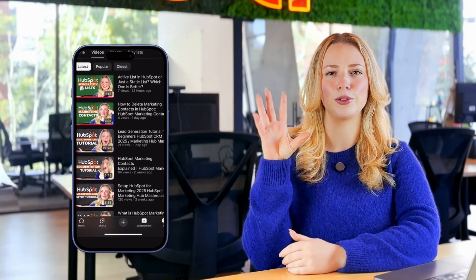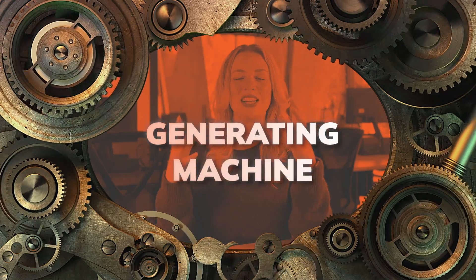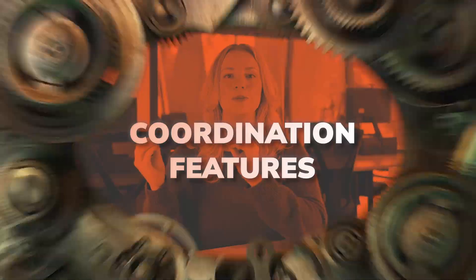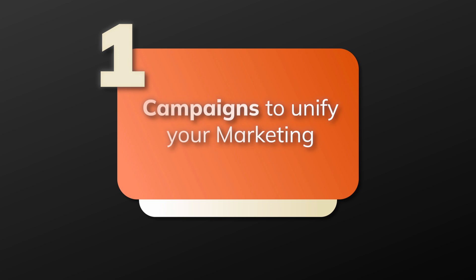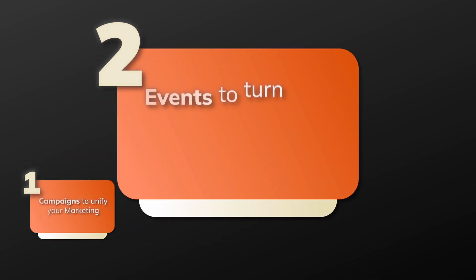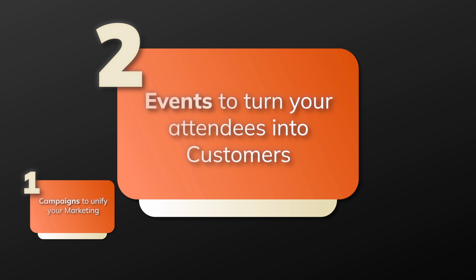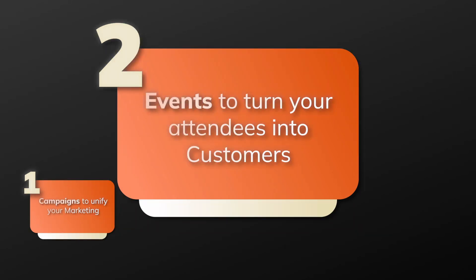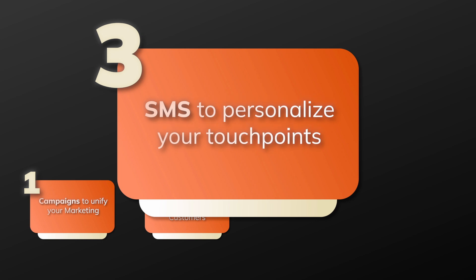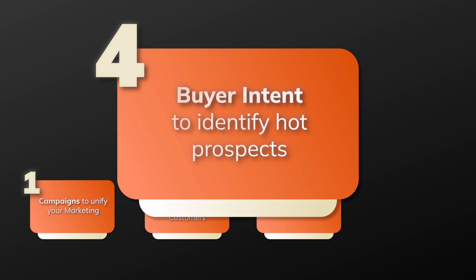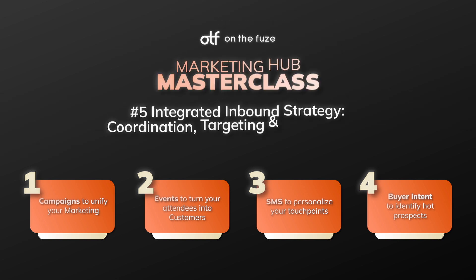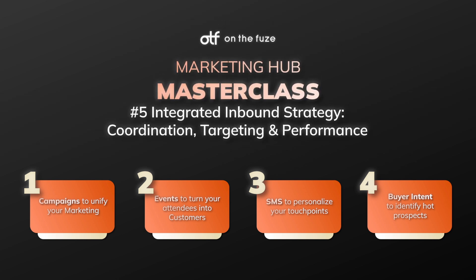Welcome back to our Marketing Hub Masterclass. In chapter four you built the perfect toolkit, so today we're turning those separate tools into one revenue-generating machine using HubSpot's coordination features. We're going to dig into campaigns, use events to manage attendees and drive conversions, explore SMS marketing for personalized touch points, and finally cover buyer intent to identify hot prospects before they even contact you.